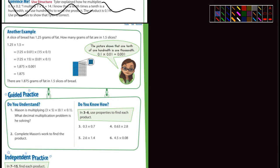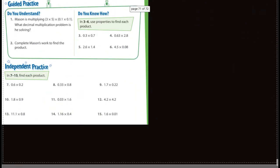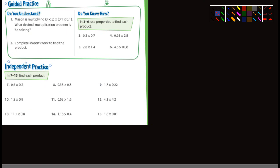So they have another example here, and again I'm not going to go over this. But I will just jump right down into the guided practice here. And let's just start looking at some of these that you guys can probably do on your own. It says, Mason is, I'm looking at number one. Mason is multiplying 3 times 5 times 0.1 times 0.1.